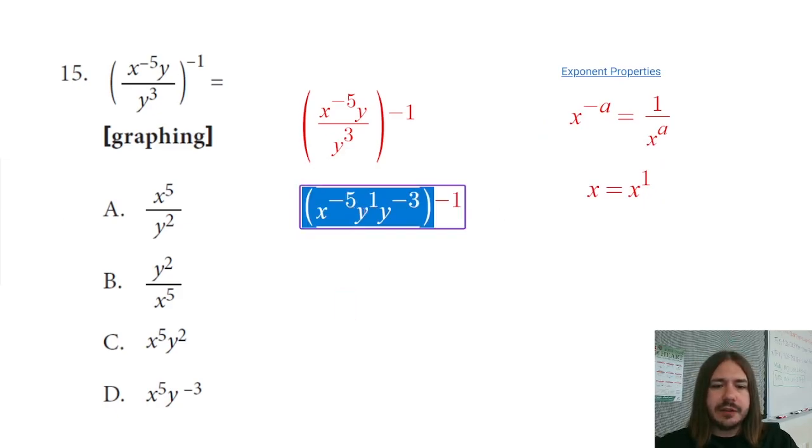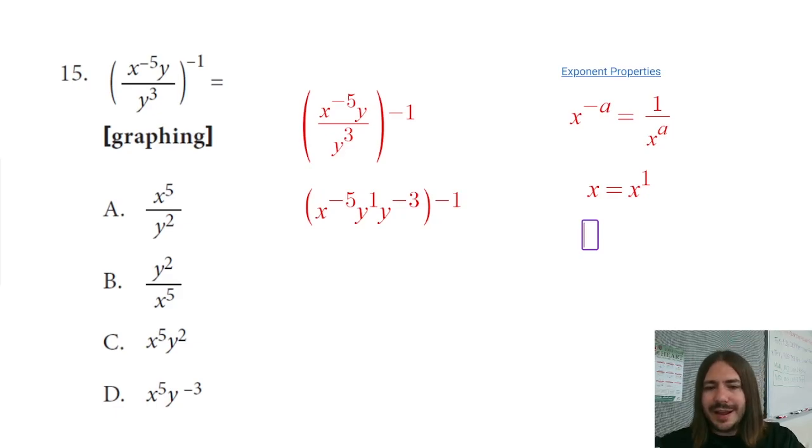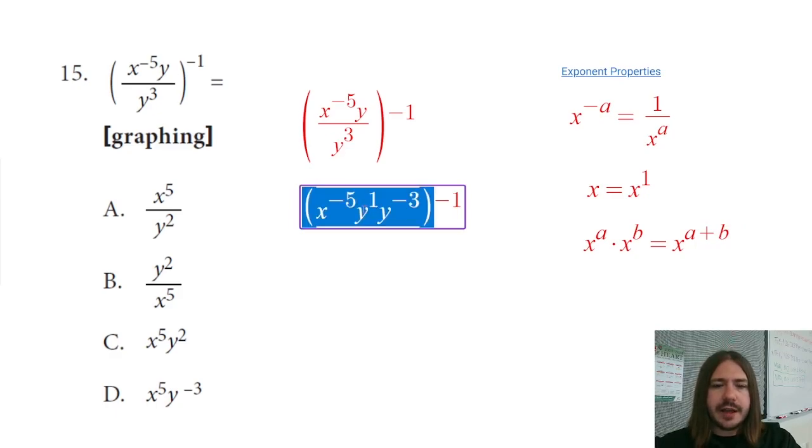The next thing I'm going to do is try to combine these y's. So the way that you combine y's when you're multiplying is called the product property. And again, I know I'm running through these properties pretty quickly, which is why at the beginning I said, go look these up so that you can be a little bit more familiar with them. But basically if you are multiplying two powers, and they have the same base here, the way to combine them is you add the powers up. And so if I have y to the first times y to the negative third, I can add those up and I get one plus negative three, which is negative two.